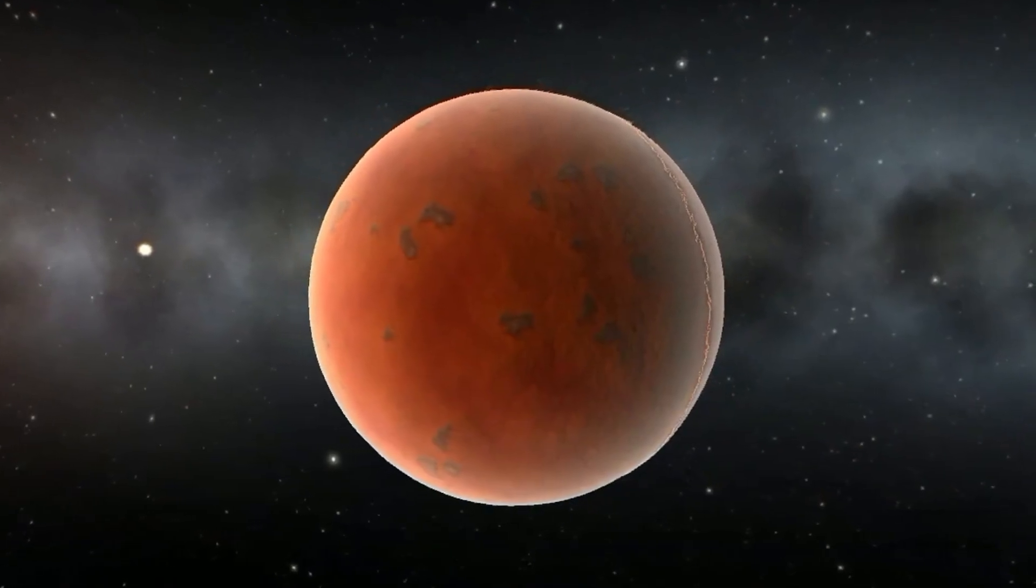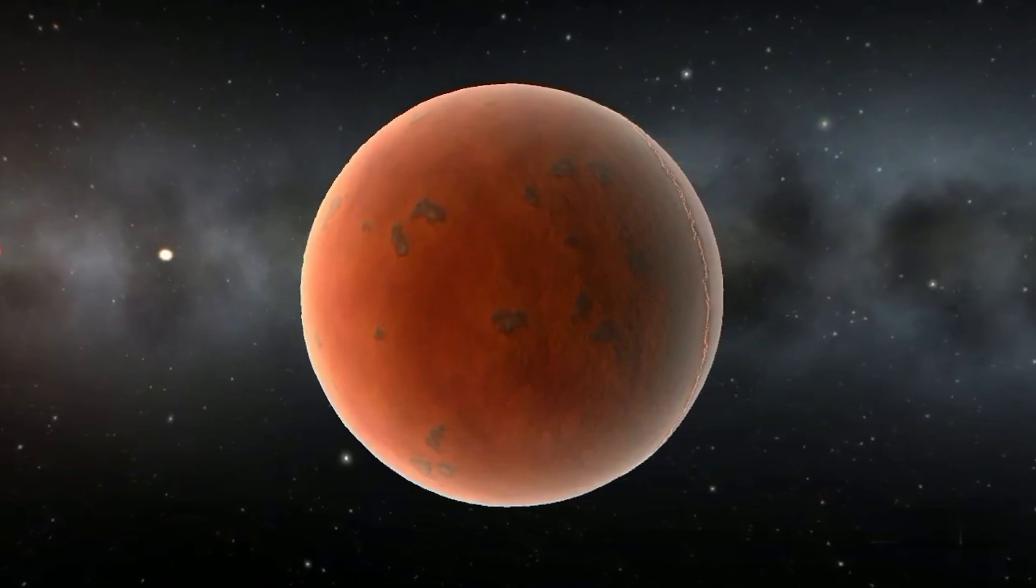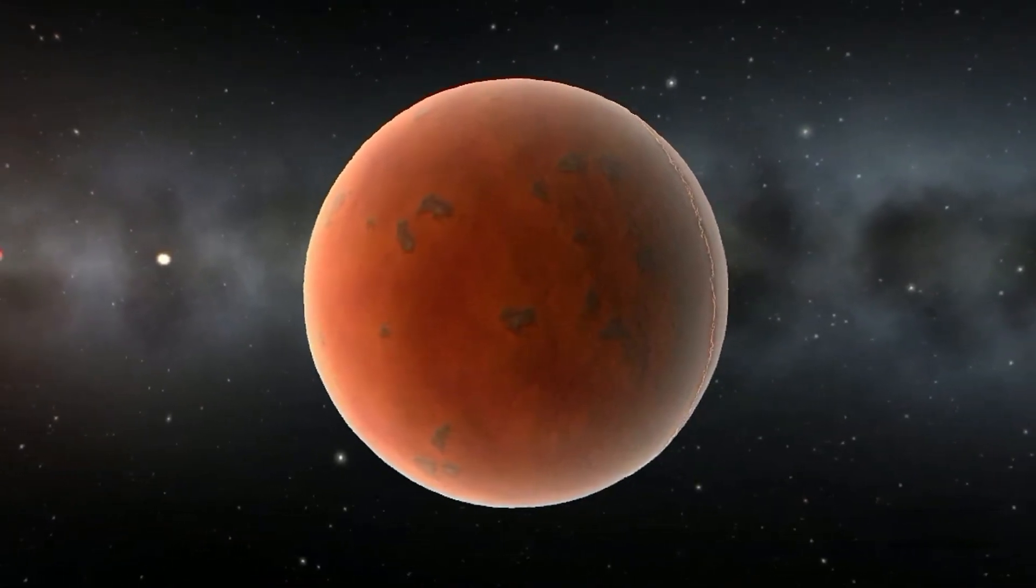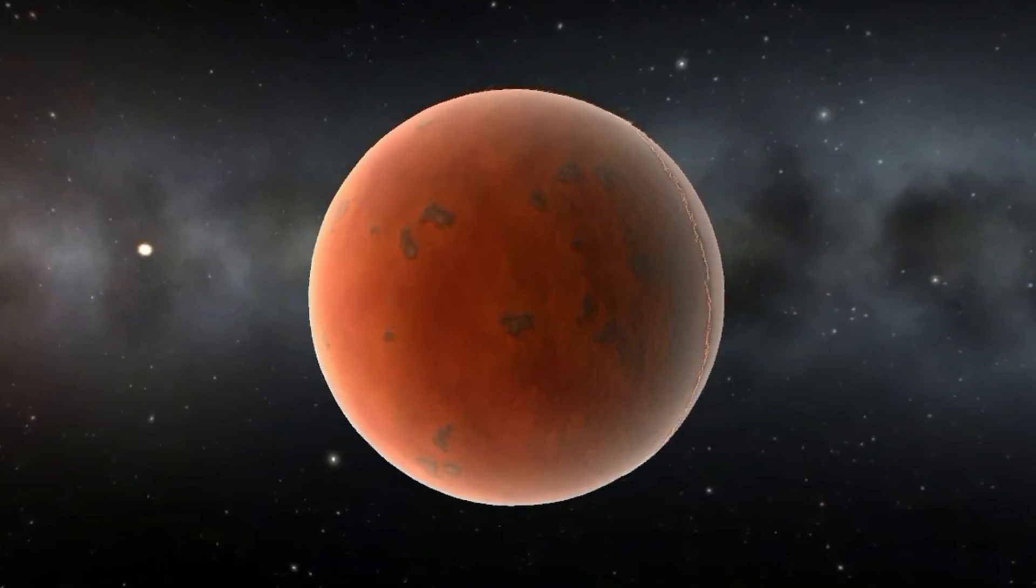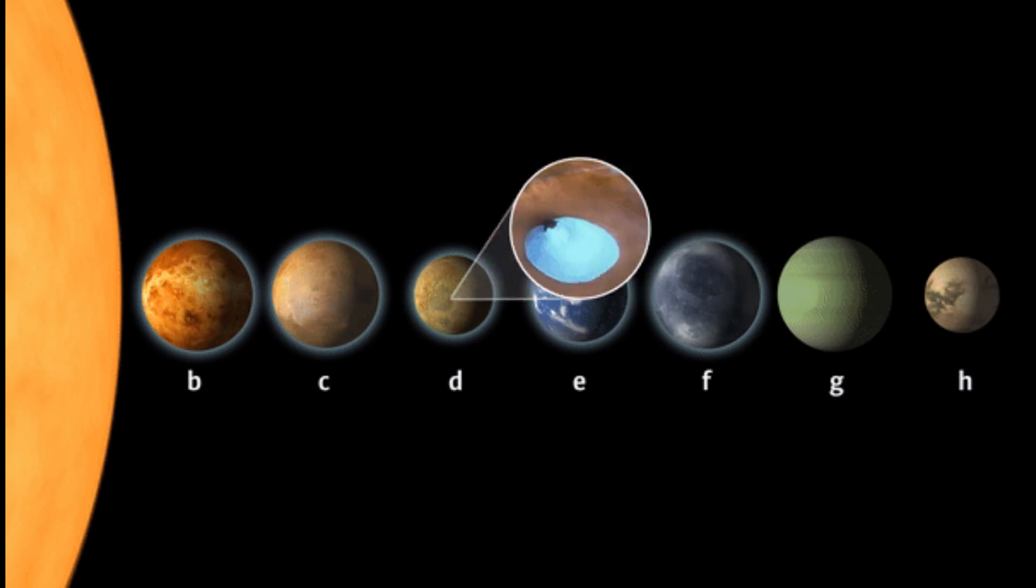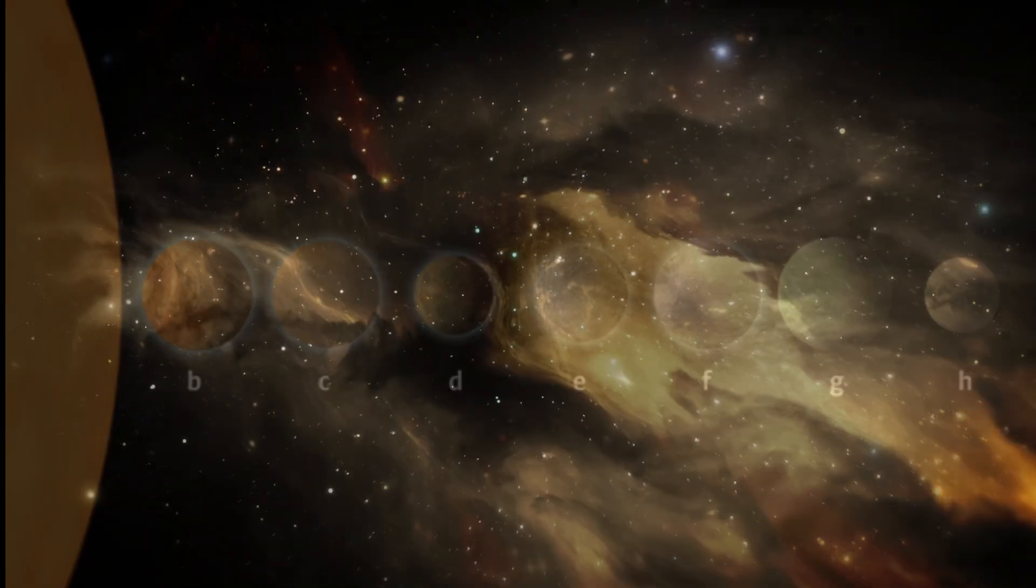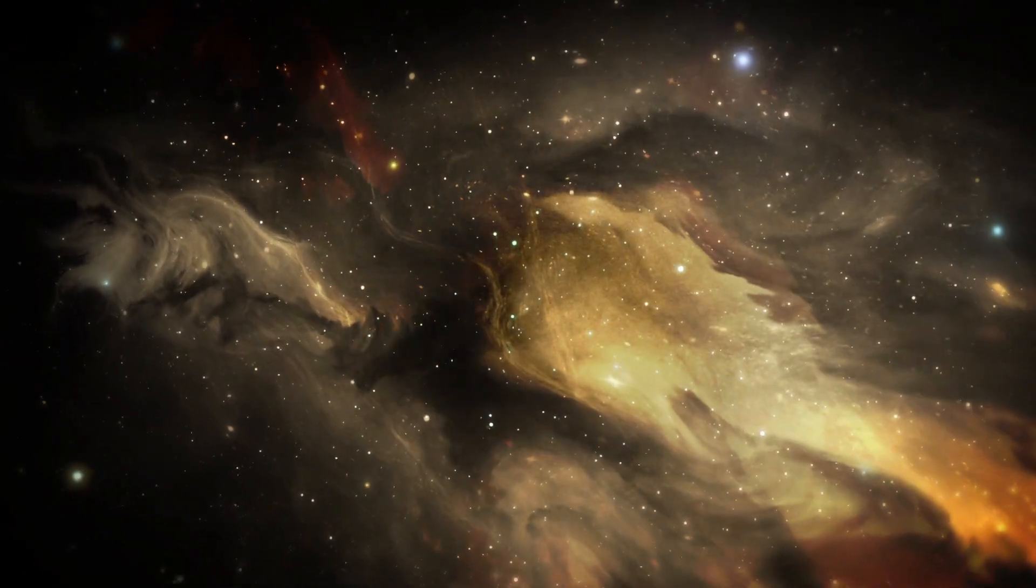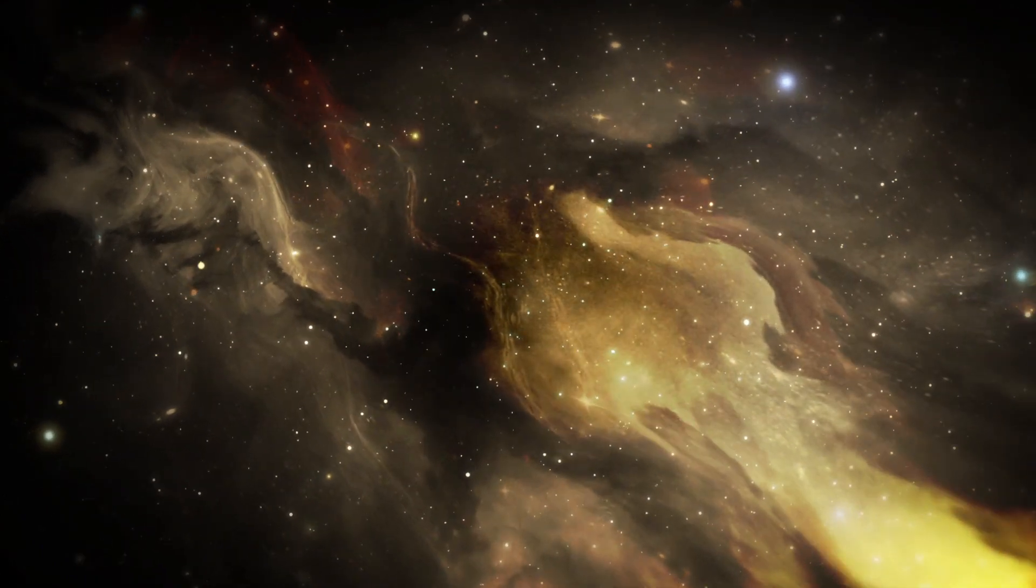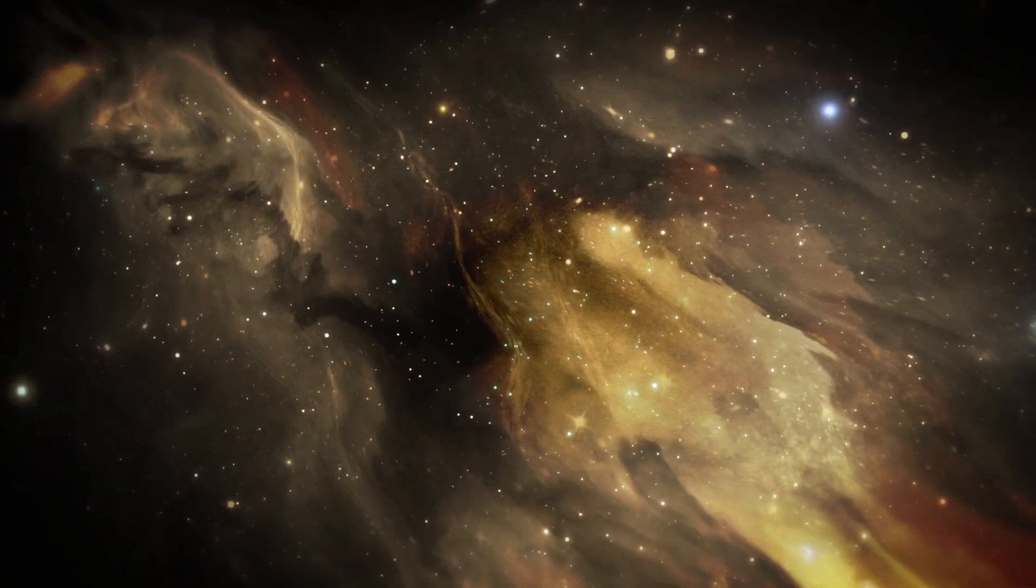Observations of TRAPPIST-1b using JWST revealed that the planet lacks an atmosphere and has an extremely high temperature of 230 degrees Celsius. This analysis marked the first time a similar exoplanet to those found in our inner solar system was examined. Further investigations of the other planets in the TRAPPIST-1 system will provide additional insights into these peculiar worlds, although the difficulty of analyzing planets further from the star increases.